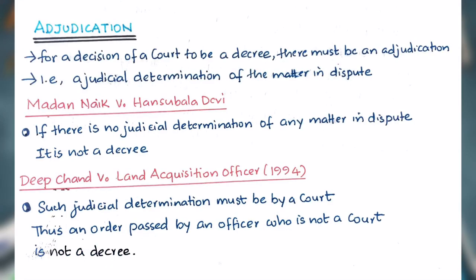Let us discuss what is adjudication. For a decision of a court to be a decree, there must be an adjudication — that is, a judicial determination of a matter in dispute. In the case of Madan Nayak v. Hansubala Devi, it was held that if there is no judicial determination of any matter in dispute, it is not a decree. In another case, Deepchand v. Land Acquisition Officer, 1994, it was held that such judicial determination must be by a court. Thus, an order passed by an officer who is not a court is not a decree.